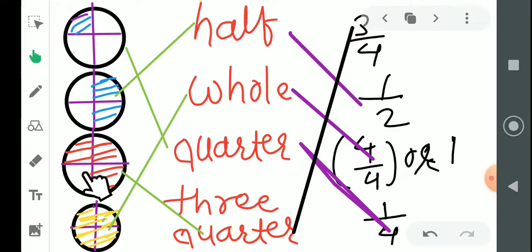When three are colored, it is called three-fourths, or we can say three-quarters. In the last figure, all four parts are colored, so it is a whole. We call this whole when the entire figure is colored.